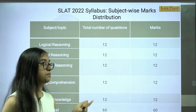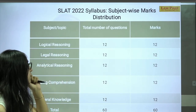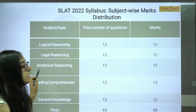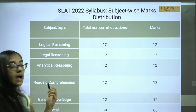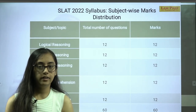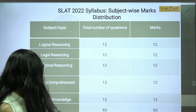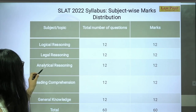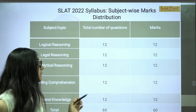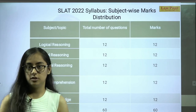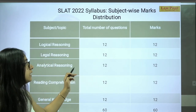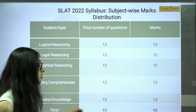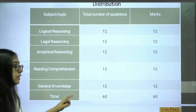There are five subjects, similar to CLAT: Logical Reasoning, Legal Reasoning, Analytical Reasoning, General Knowledge, and English including Reading Comprehension. Each section carries 12 marks with 12 questions of one mark each, totalling 60 questions.